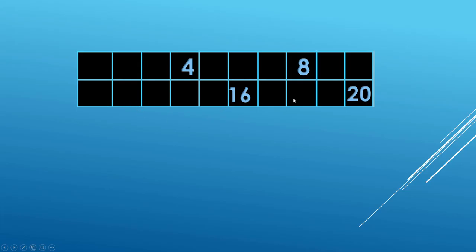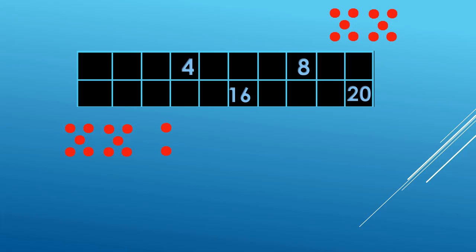Fourteen, sixteen, eighteen, twenty. Now if you don't remember the big ones, you can start with two times five is ten and jump forward two to get to two times six is twelve.